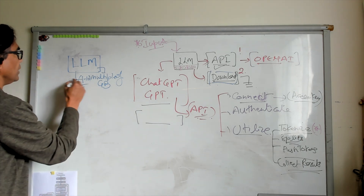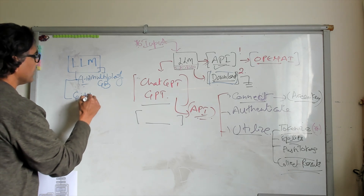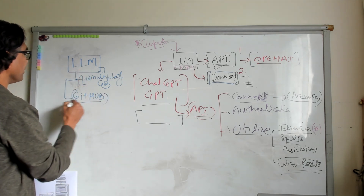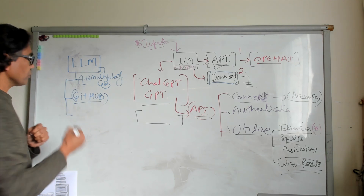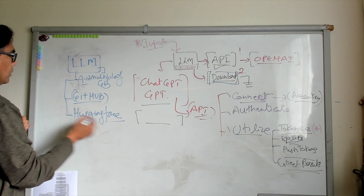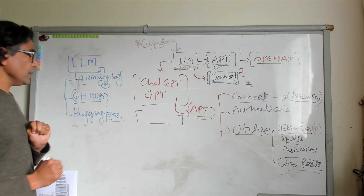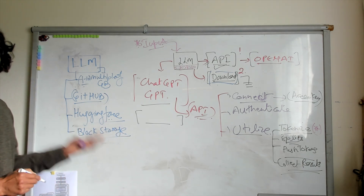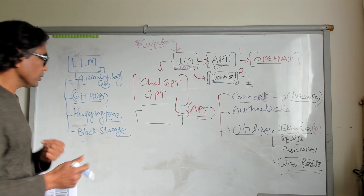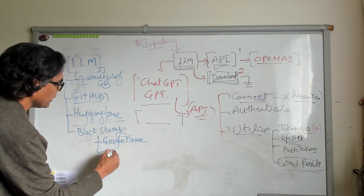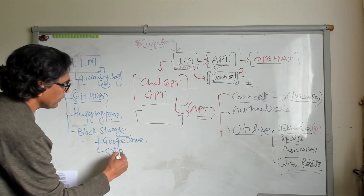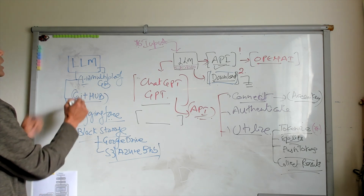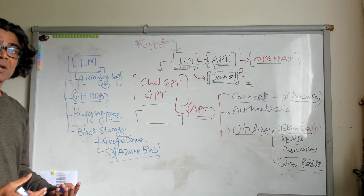Sometimes if users are using GitHub, they could split it into large file objects using Git LFS and that's where you can get it from GitHub. Another very popular option is Hugging Face, where you can get the model hosted there. A third option is block storage — because block storage can have really very large file sizes — for example Google Drive, AWS S3, Azure Blob Storage, or Google Cloud Storage.